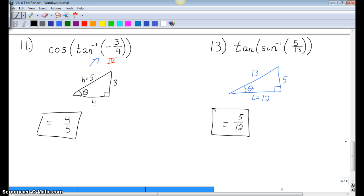That's how you do 11 and 13. Set up a triangle, fill out the three sides, and then look at that outer trig function, and just give me the ratio for it. And that is the end of 8.2.